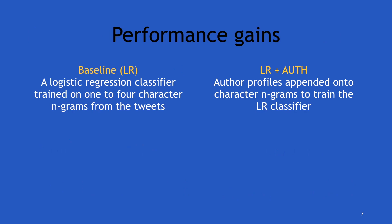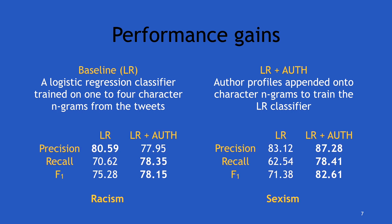When we appended these author profiles onto very strong baselines — like a character n-gram logistic regression baseline — we actually saw great gains in performance, both in precision and recall across both classes, racism and sexism. We figured these gains come from the fact that author profiles are able to better capture contextual information, and hence help with implicit abuse that is very hard to catch.